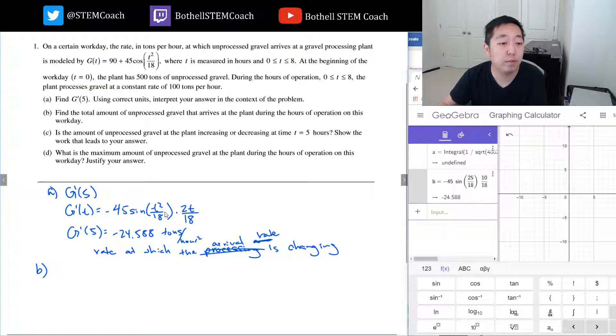Find the total amount of unprocessed gravel that arrives at the plant during the hours of operation. So the total amount, since this is the rate, I want the total amount of g(t) dt. And I'm integrating over, let's see, that arrives at the plant, hours of operation from zero to eight.